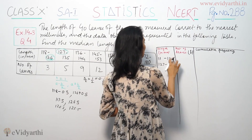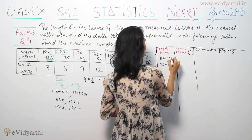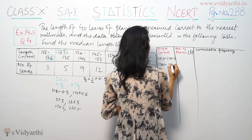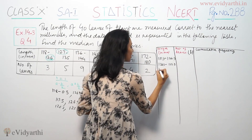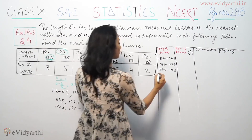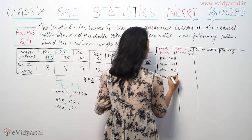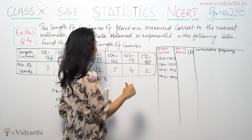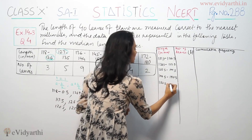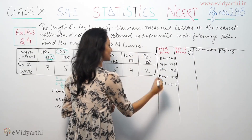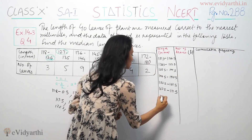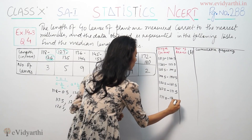So the adjusted class boundaries become: 117.5 to 126.5, then 126.5 to 135.5, then 135.5 to 144.5, then 144.5 to 153.5, then 153.5 to 162.5, then 162.5 to 171.5, and finally 171.5 to 180.5.